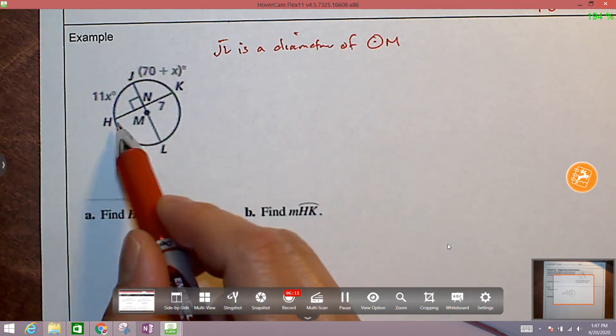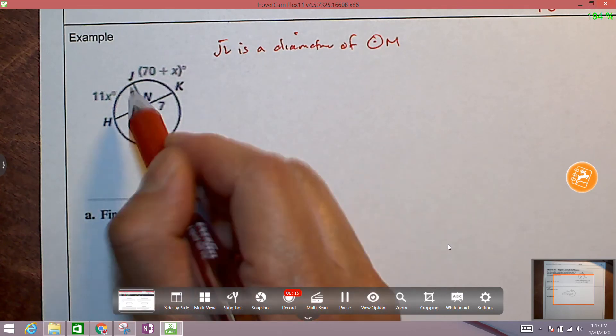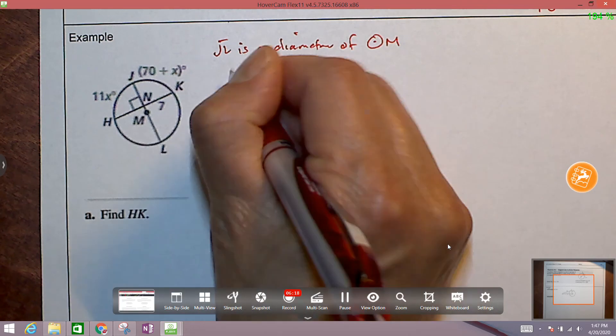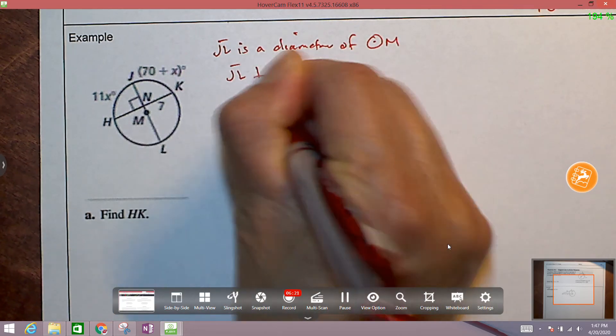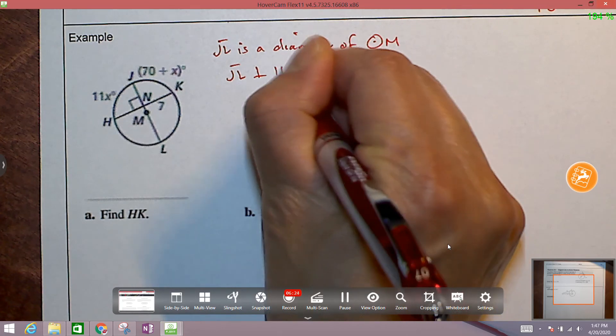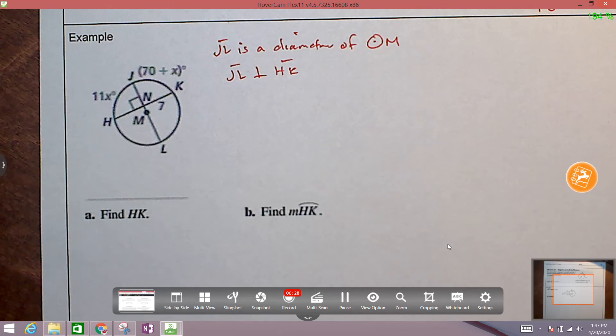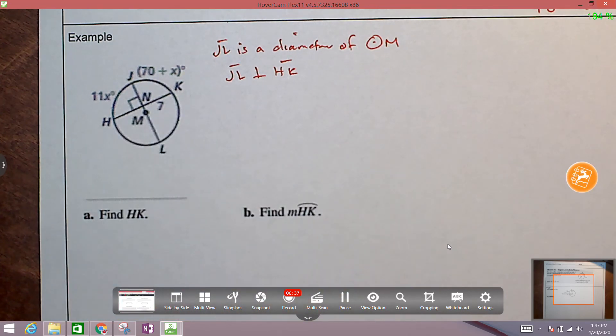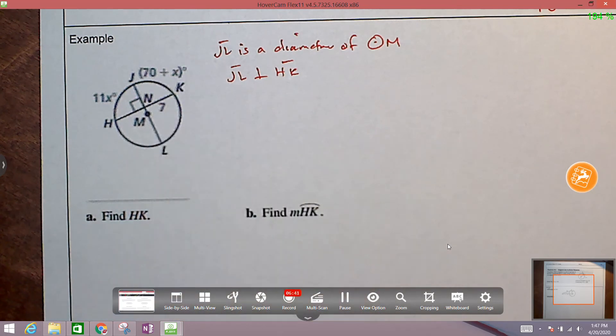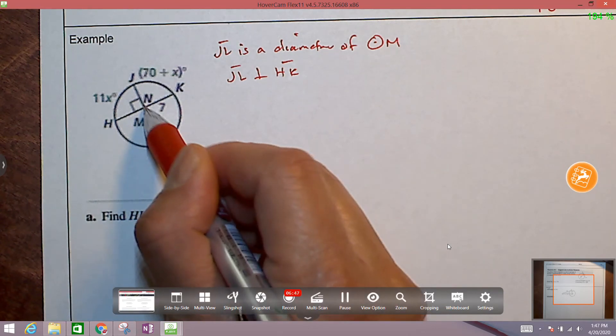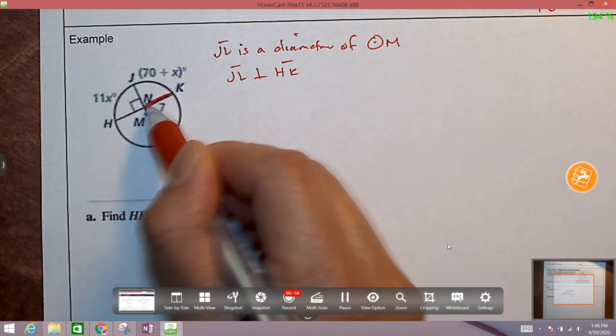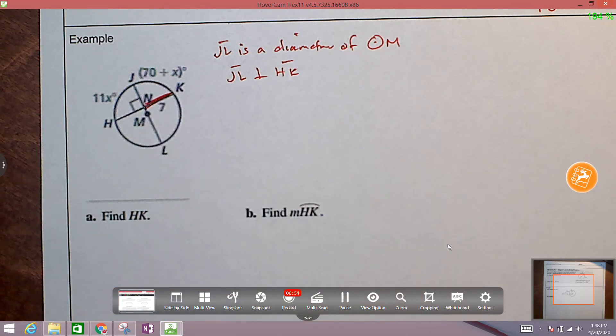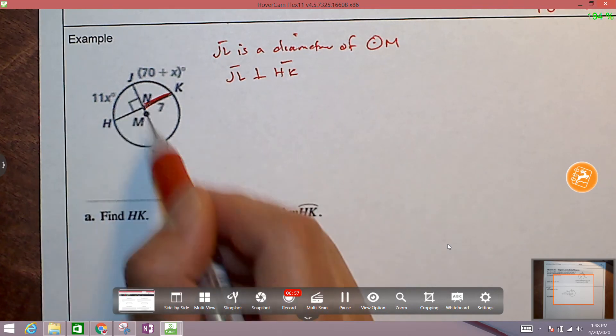So we're given that segment JL is a diameter of circle M. We also have this chord here, segment HK. And we can see we're given that this is perpendicular. So we're given that segment JL is perpendicular to segment HK. And they intersect at point N. So the first thing we're asked to do is to find HK, the length from H to K. So how are we going to do that? Well, we have this 7 right here. What is that 7 referring to? What is that measuring? 7 is the length from N to K. That's this piece right here.